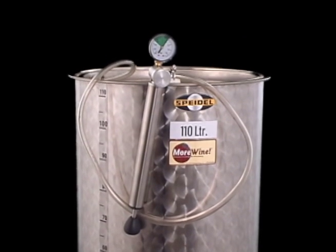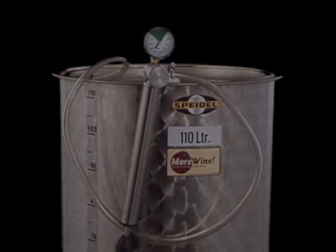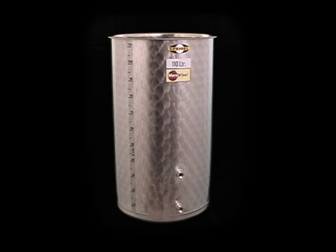Welcome to Morawine's Variable Volume Tank Assembly video. Everything you need to start using your tank is included in the box. In order to protect it during shipping, your tank will arrive without the hardware attached and will need to be assembled before use. All you need is a crescent wrench and a flathead screwdriver. So, grab your tools and let's get to it.